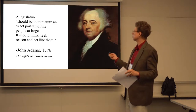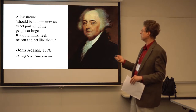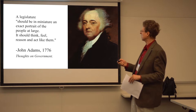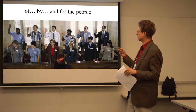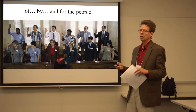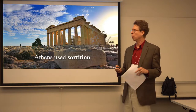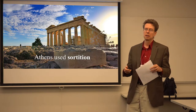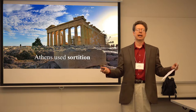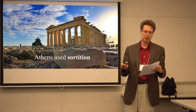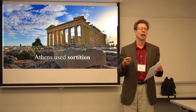What John Adams wrote in 1776 is that the legislature should be in miniature an exact portrait of the people at large — it should think, feel, reason, and act like them. Or Abraham Lincoln: democracy is about of, by, and for the people. What we have come to accept is that it's actually more white, older, wealthier males who are the representatives. But we need to go back to the original democracy and understand that they did not rely on elections very much at all.